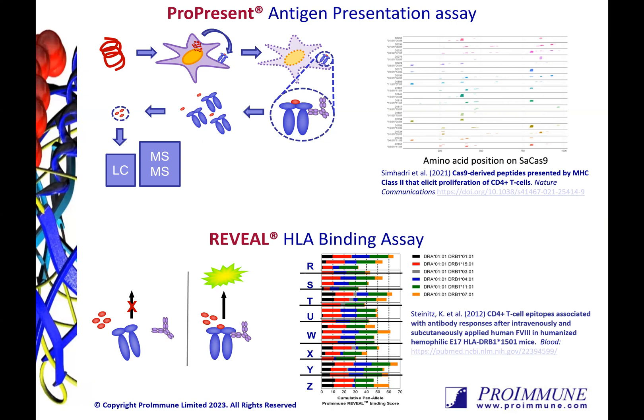This widely utilized approach has been used to characterize therapeutic antibodies, blood replacement factors, complex bacterial pathogens, food proteins, and many more. One key example comes from Editas and the FDA, where ProPresent was used to identify 22 unique peptides from Staphylococcus aureus CRISPR-Cas9. Promiscuously presented peptides detected across multiple donors represent sequences that are at a higher risk of immunogenicity due to broad population coverage and could be considered for engineering.